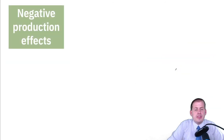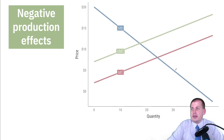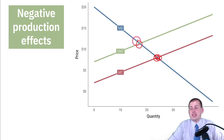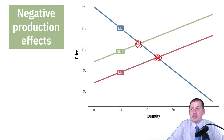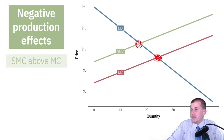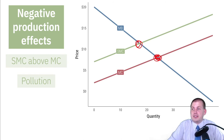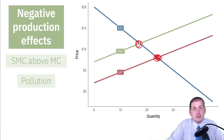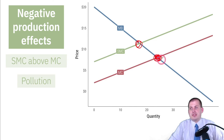We also have negative production externalities. In this situation, what is being produced right now is higher than where society should be — society should be hitting a level that is much less and more expensive. But because nobody's paying for the external costs, we're stuck in a world where it's cheap and there's too much of it. The classic example is pollution again: if a factory can make however much it wants and spit out however much pollution it wants, it will do a lot of it, and society will want less but can't get there because nobody's bearing that cost.